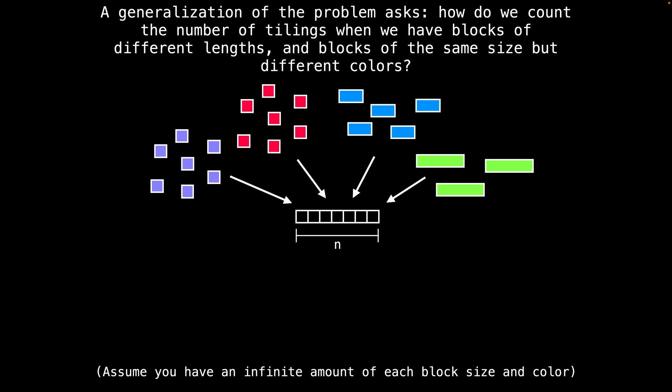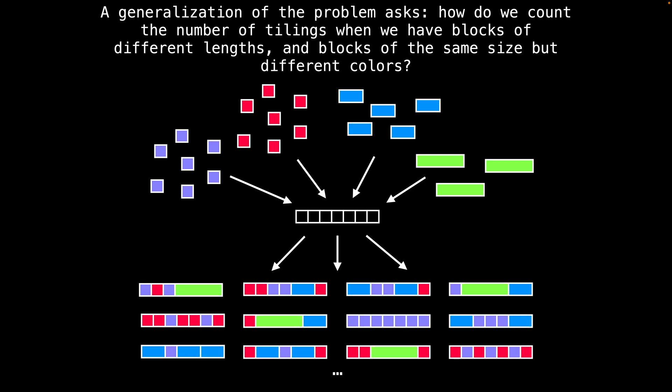Today, we're going to ask the generalization of the problem, which is how do we count the number of tilings when we have blocks of different lengths, and blocks of the same length but different colors. Again, you can assume that there is an infinite amount of each block size and color. For instance, as you can imagine, there are numerous ways to tile a board of length seven with the four different block sizes displayed above.